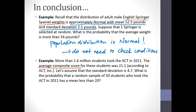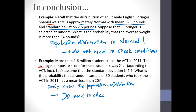In the ACT example and the honey badger example, we weren't told anything about the population distribution. When we don't know the population distribution, we need to make sure our conditions check out in order to use those same calculations. That will then allow us to know the sample mean has a normal distribution and we can use probability calculations. So depending on what we know about the population distribution, we either proceed directly with calculations or we need to check some conditions first.